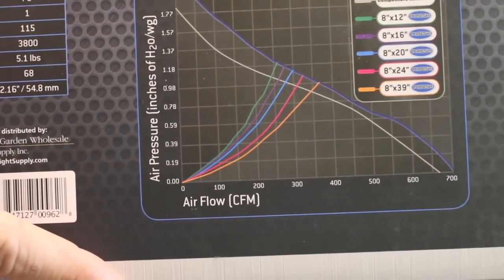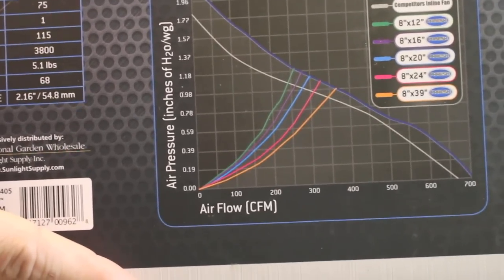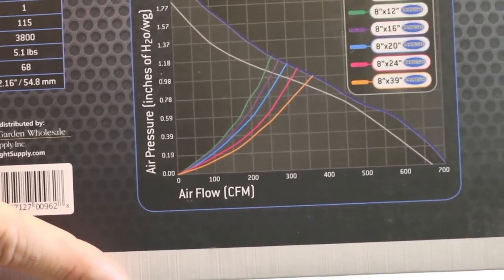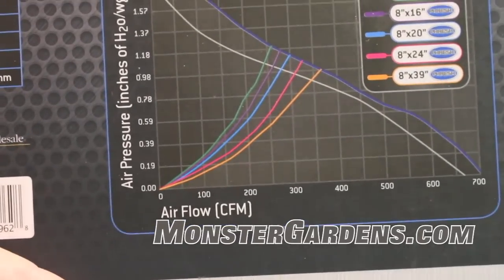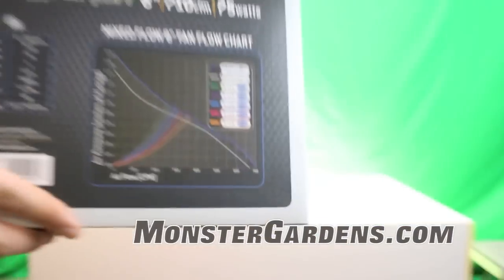275 CFM once you add this fan to that filter. An 8 by 16 inch filter, it's gonna be right around 200 and maybe 60, 265 CFM. So those are important numbers for you guys that are going to be using this fan with a filter.